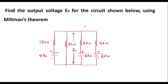In this video, let me consider one numerical on Millman's theorem. Find the output voltage E0 for the circuit shown below using Millman's theorem. This is the given circuit. We have to find voltage E0, which is between these two terminals. We are supposed to calculate this using Millman's theorem.